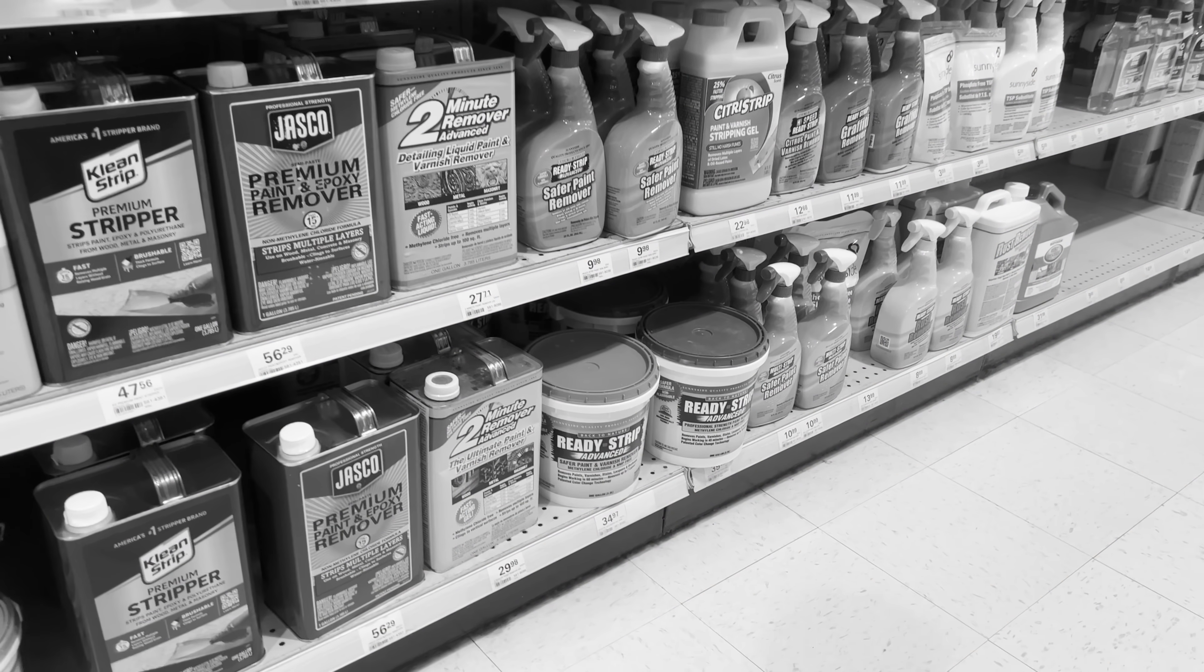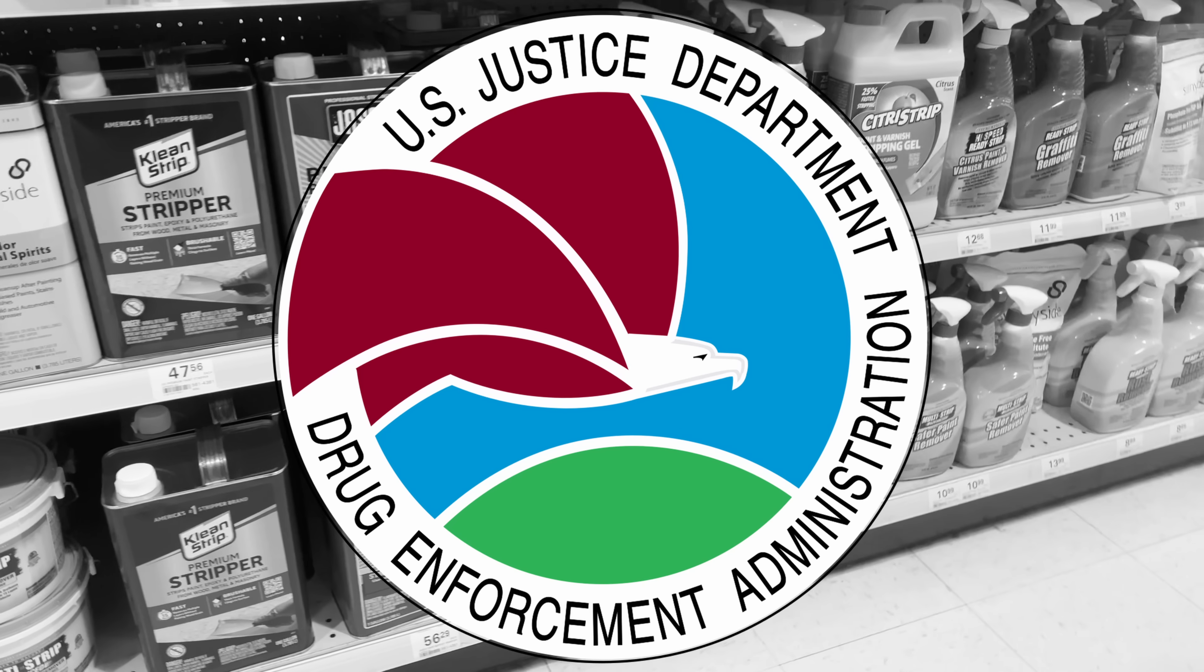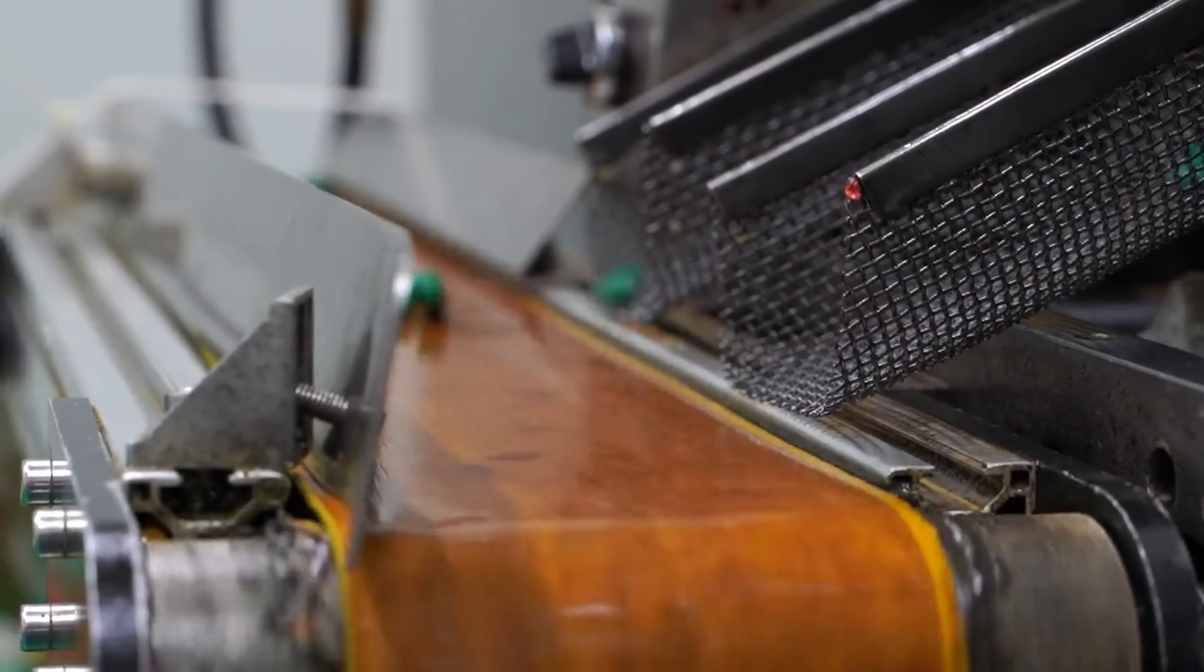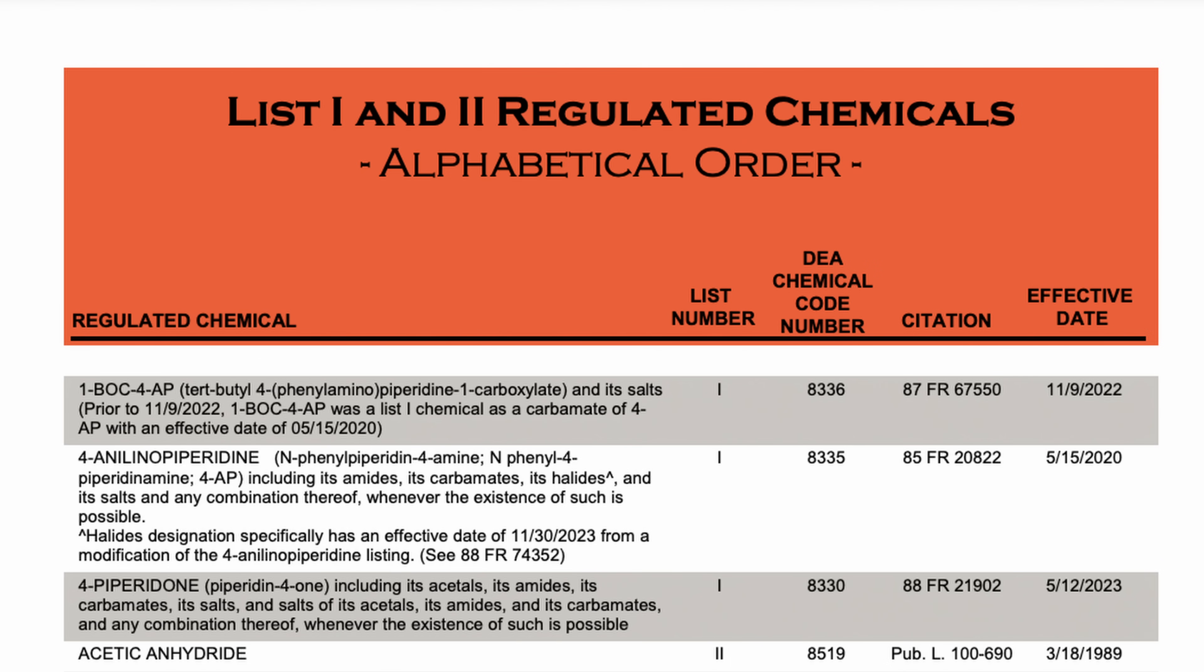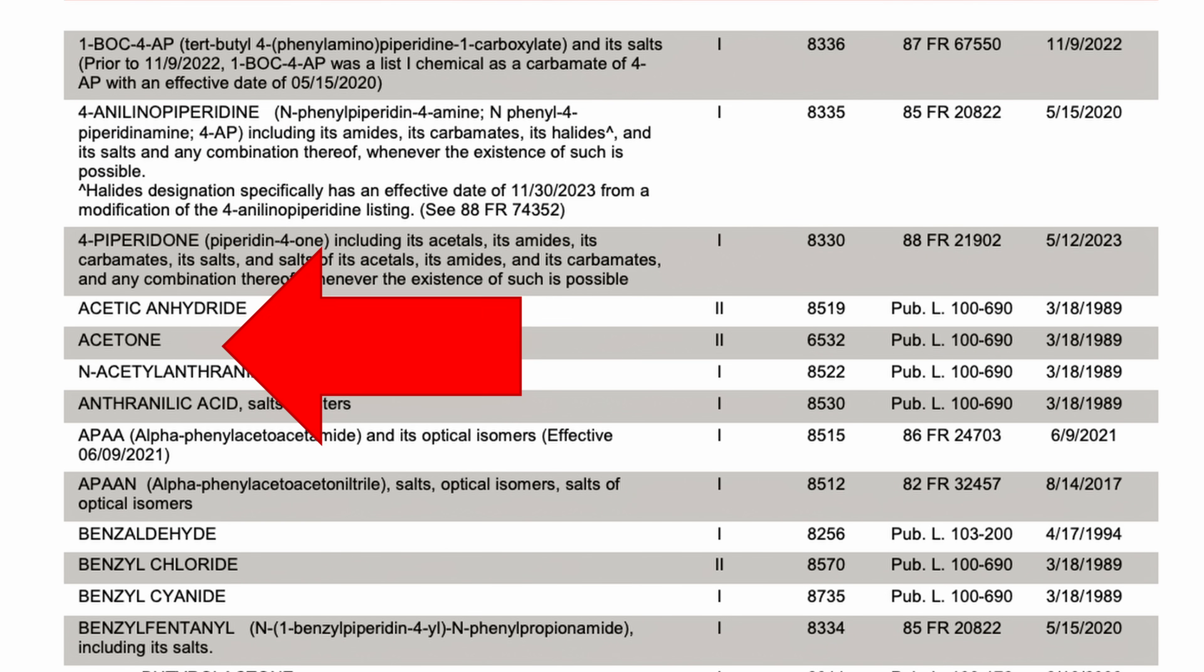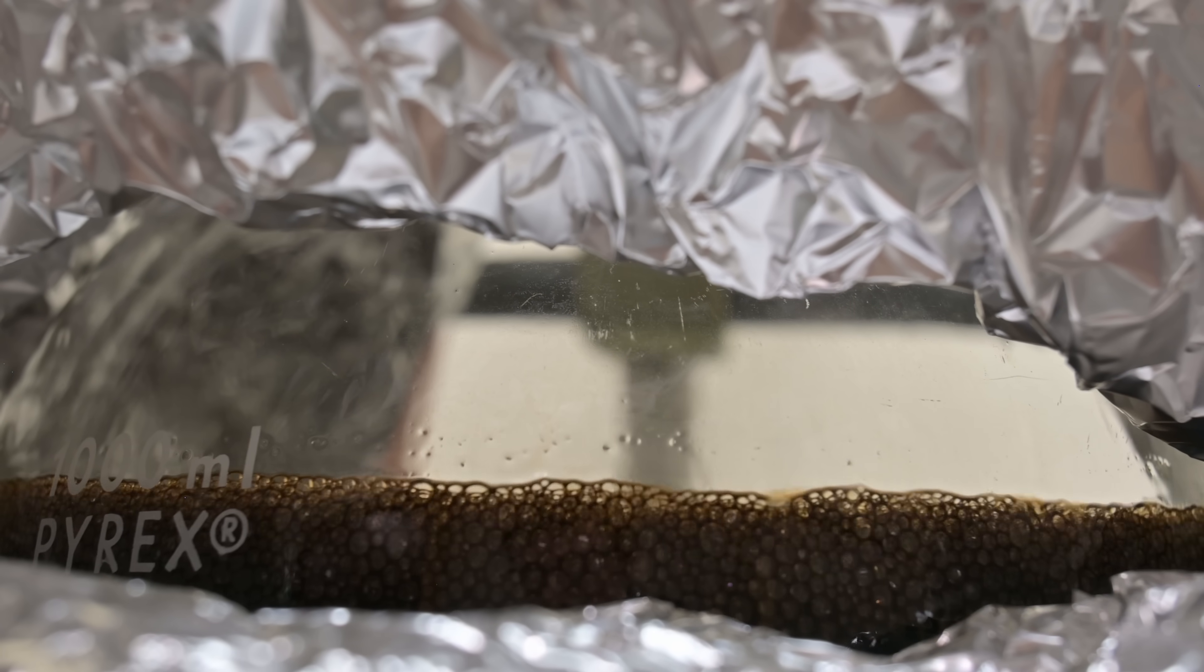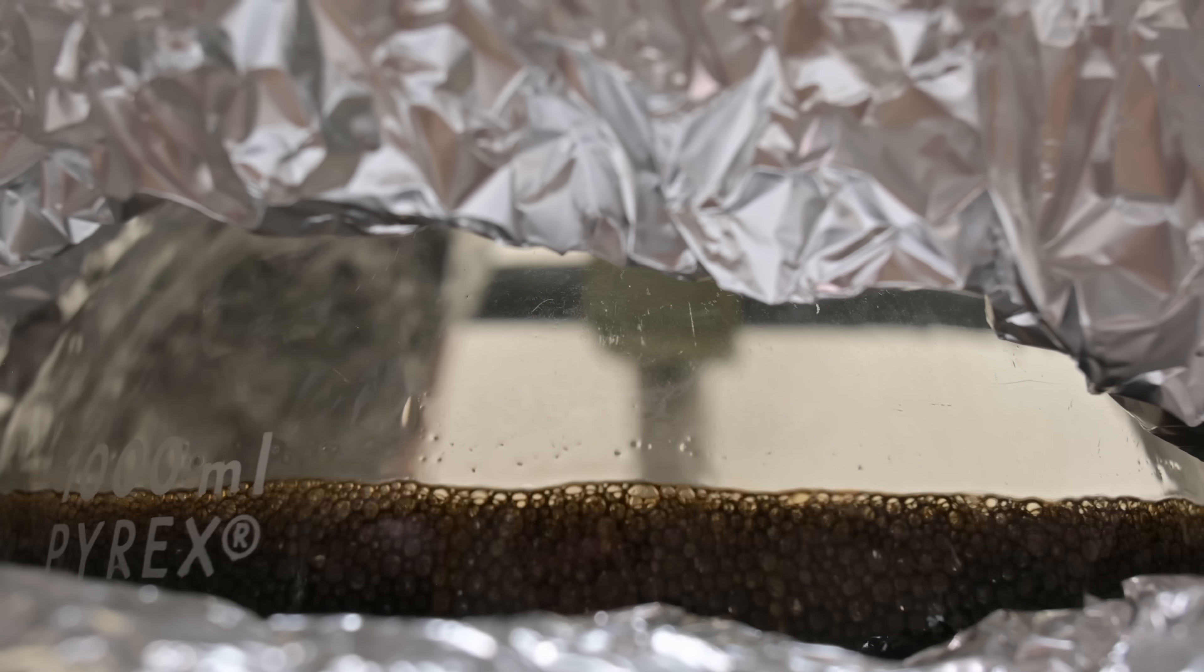Shockingly enough, some of the chemicals sold off the shelf fall under the regulation of the Drug Enforcement Administration, due to them being used in the production of illicit substances. The DEA chemical list has stuff as mundane as acetone to exotic like lithium aluminum hydride. This list is quite annoying for any law-abiding or amateur home chemist.